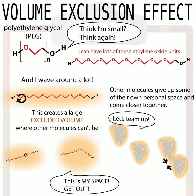Some of the most popular precipitants are synthetic polymers called PEGs — polyethylene glycols. A polymer is just a chain of repeating units, and PEG has long floppy chains of ethylene oxide units, with oxygens that make it polar and water-soluble. It's kind of like one of those inflatable air dancers outside car dealerships, flopping around a lot. This creates a large excluded volume where other molecules can't be — it's taking up more space than it deserves, like man-spreading at the molecular level — leaving less space for the proteins, so the proteins team up and crystallize.